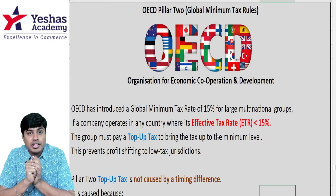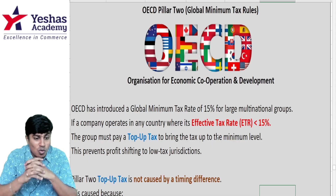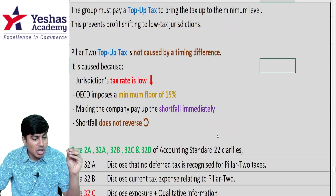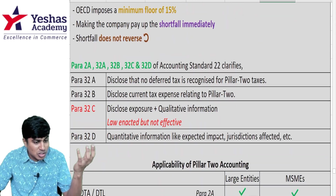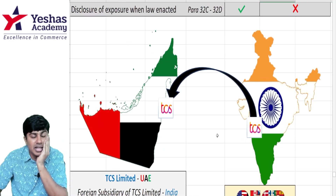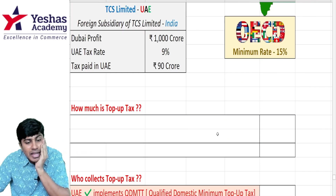What is OECD? What is pillar 2 taxation? What is global minimum tax rules? What is this top-up tax? What is DTA, DTL? What's all this?